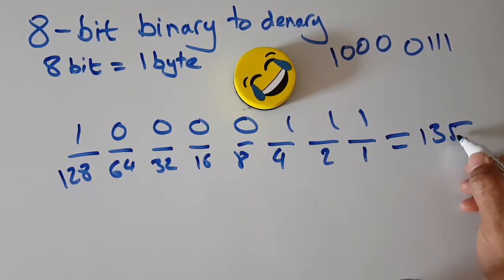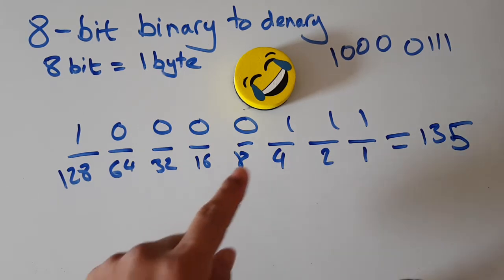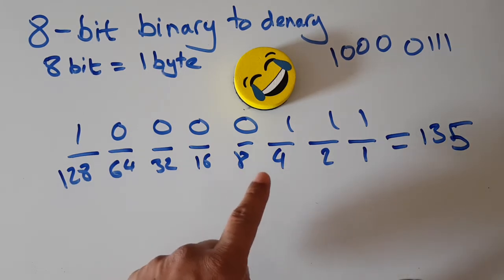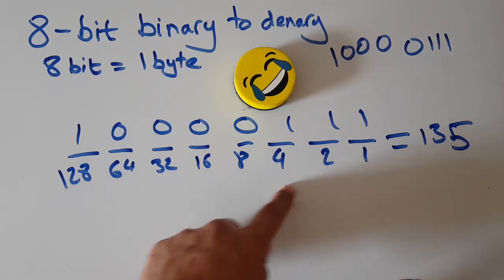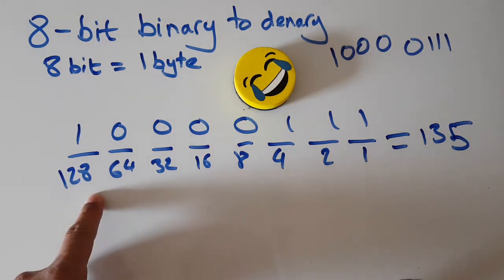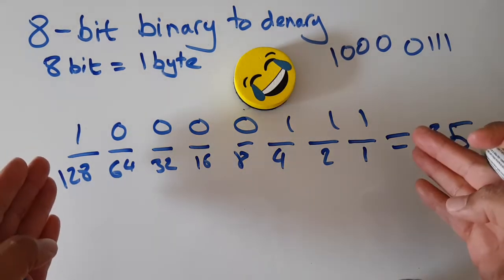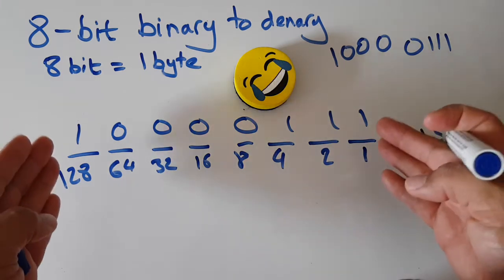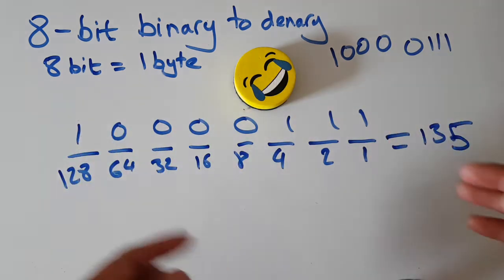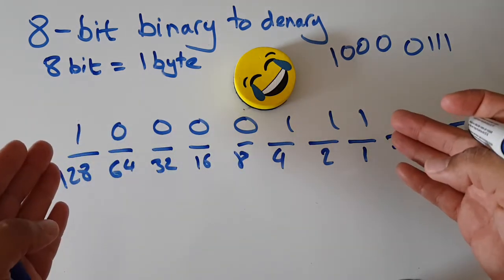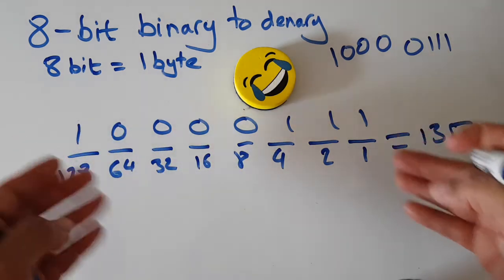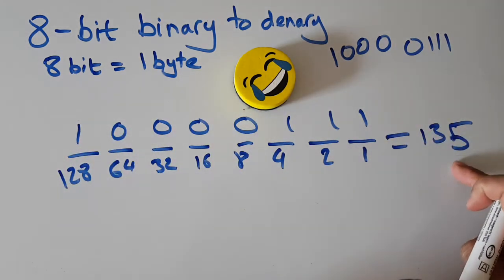So what we've done is taken the 4-bit system and extended it to 8 bits. Now we can convert 8-bit binary into a denary or decimal answer.